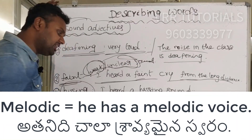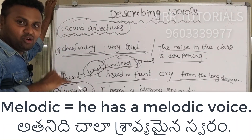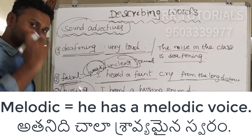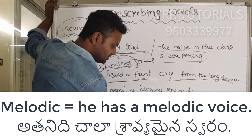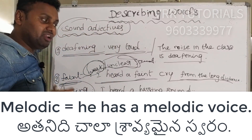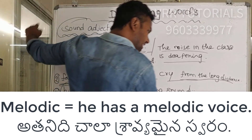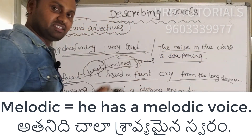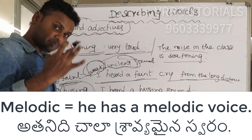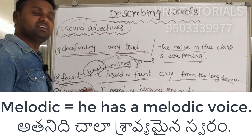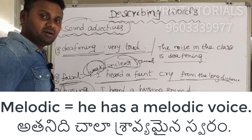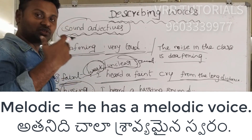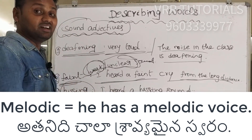Next is 'melodic.' Melodic means very melodious or very pleasant to listen to. For example: this is a melodious song; he has a melodic voice. His voice is melodious — he may be a singer.